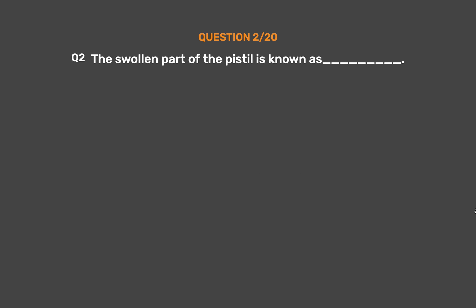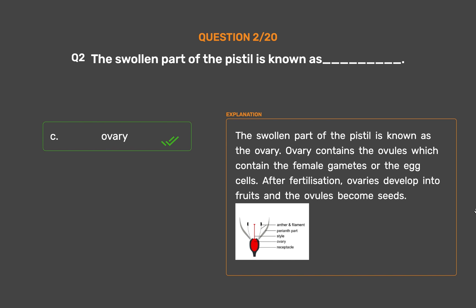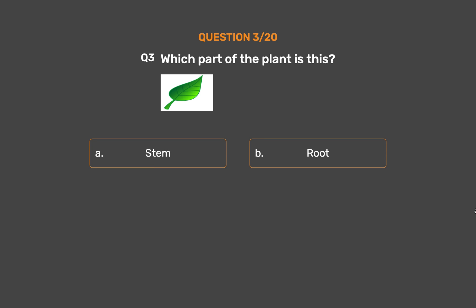Question 2: The swollen part of the pistil is known as ___. Option A: Ovules, Option B: Petals, Option C: Ovary, Option D: Stamen. The correct answer is Option C, Ovary. The swollen part of the pistil is known as the ovary. The ovary contains the ovules, which contain the female gametes or egg cells. After fertilization, ovaries develop into fruits and the ovules become seeds.